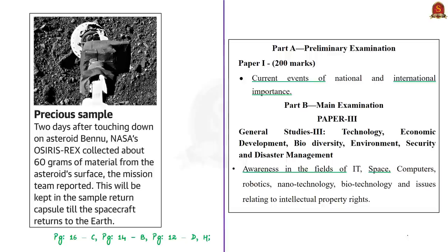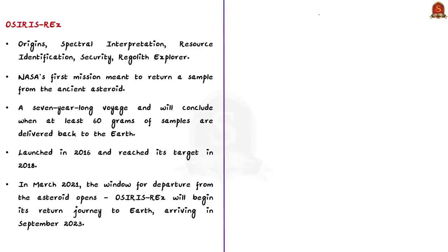Now let's look at the science and technology news. NASA's OSIRIS-REx collected about 60 grams of material from the surface of the Bennu asteroid. Let us have a brief understanding of this mission. OSIRIS-REx is the acronym for Origins, Spectral Interpretation, Resource Identification, Security, Regolith Explorer. This is the first NASA mission meant to return a sample from an ancient asteroid.